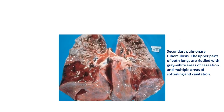In secondary pulmonary tuberculosis, the upper parts of both lungs are riddled with gray-white areas of caseation, and multiple areas of softening and cavitation.